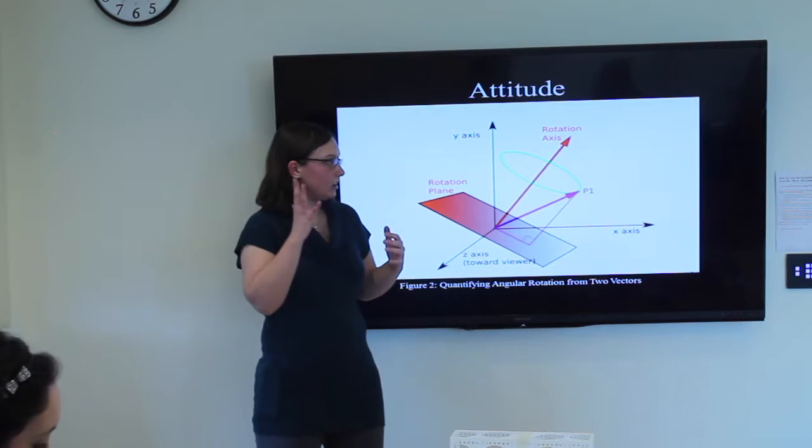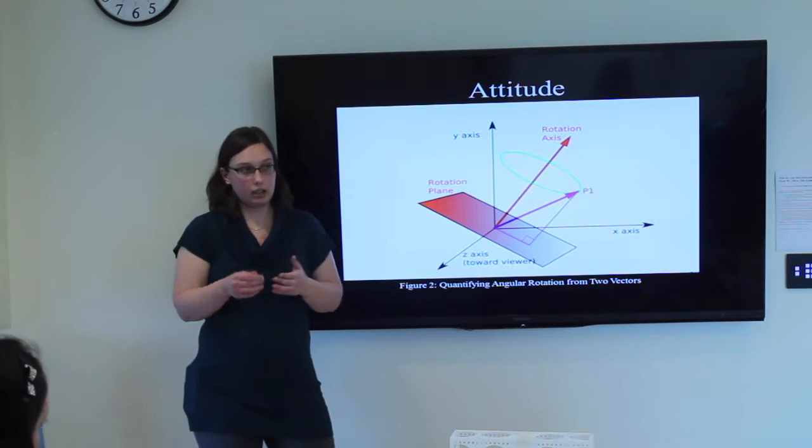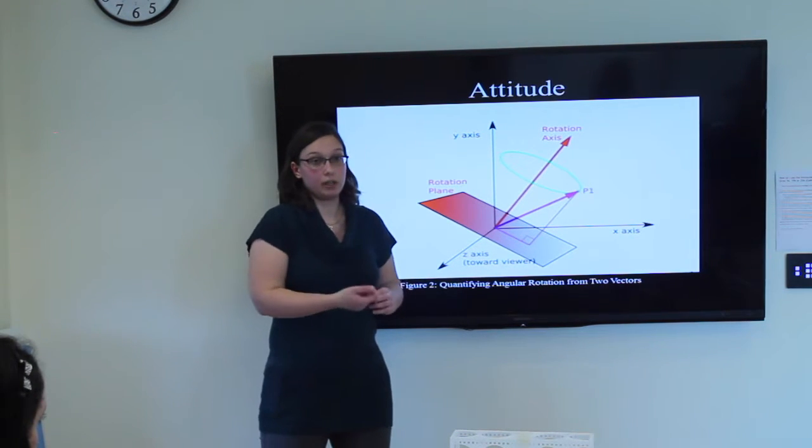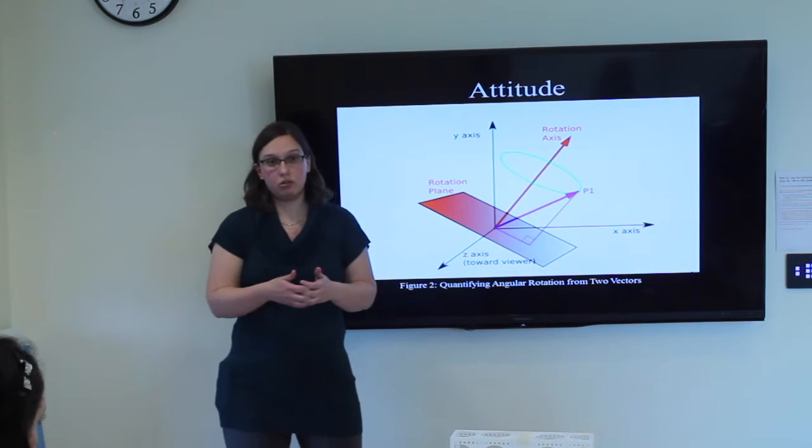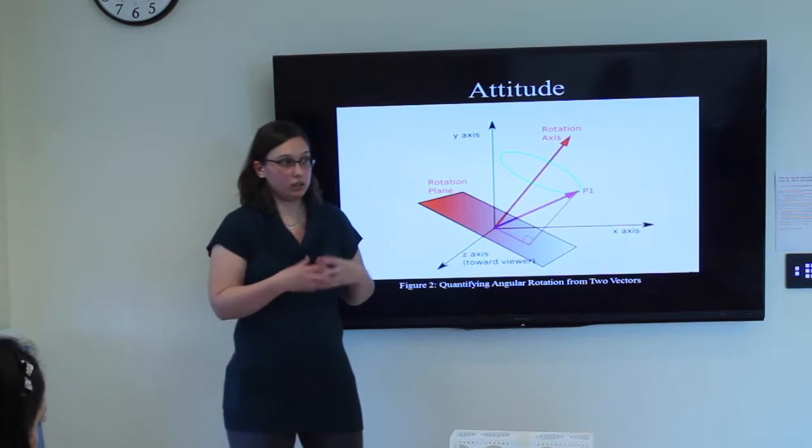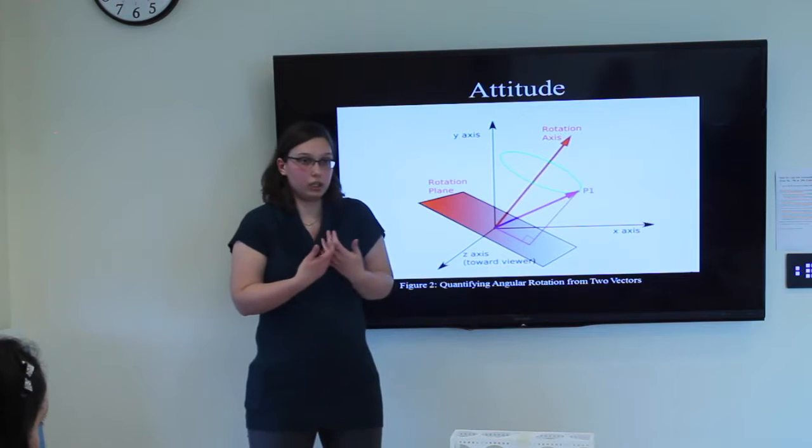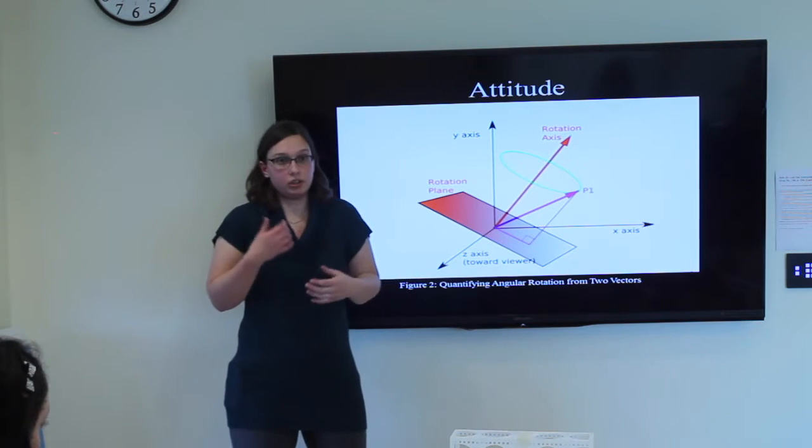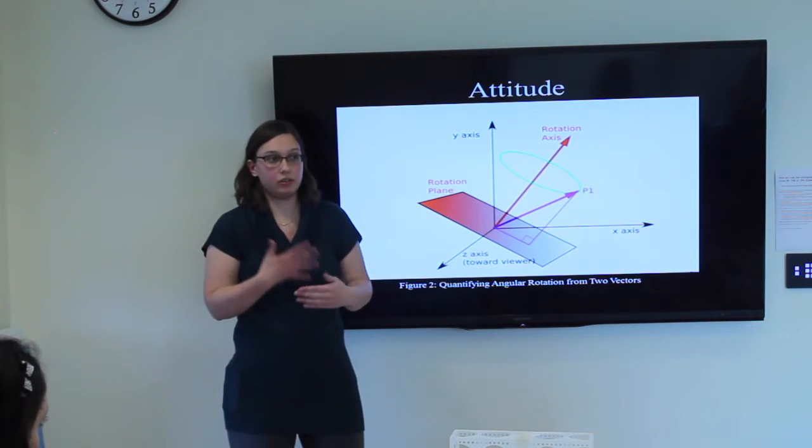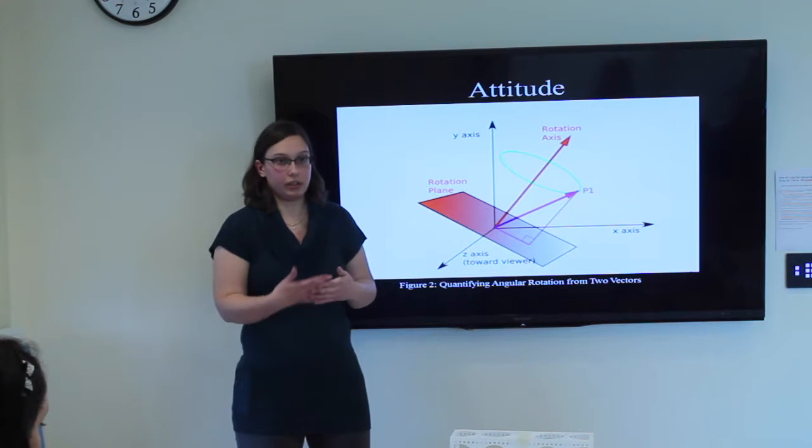It could give us information about how our satellite has rotated about its axis. We could use various methods like the cross-product method, which uses two sets of sensor data and does some cross-products and whatnot. Or we could use the Kalman filter, which is just an update to matrices in time with various sensor data.